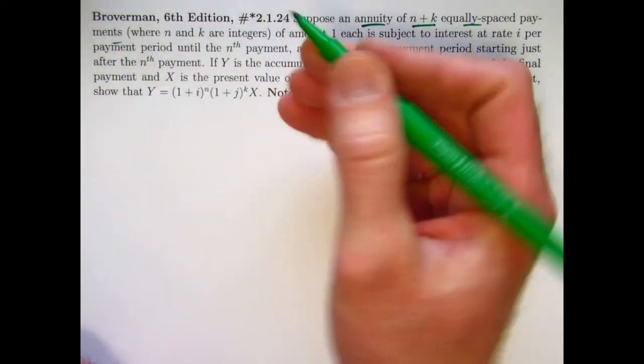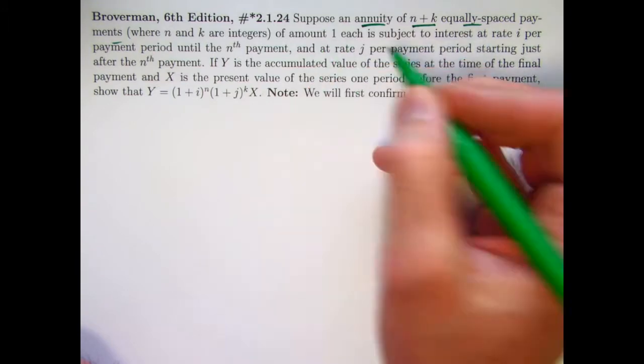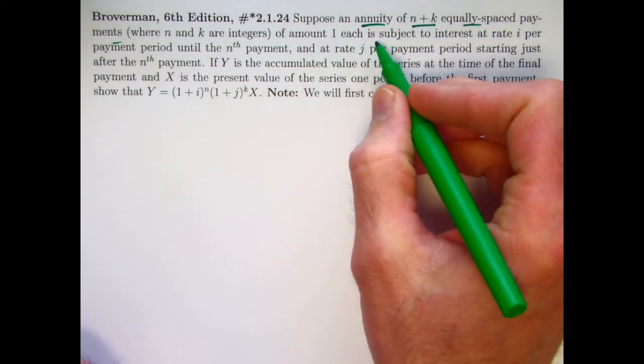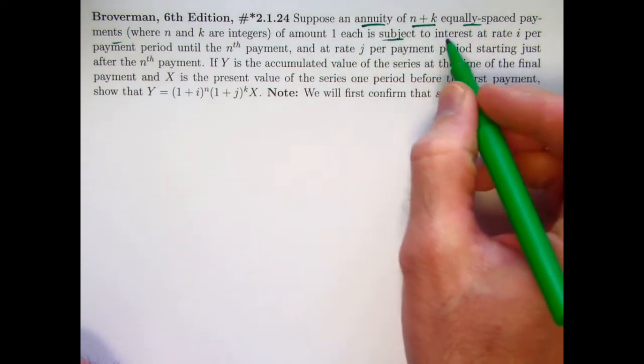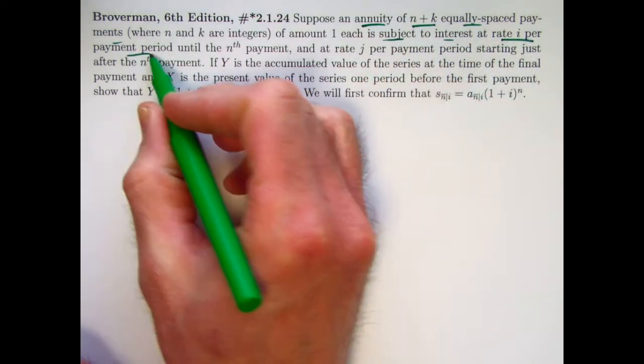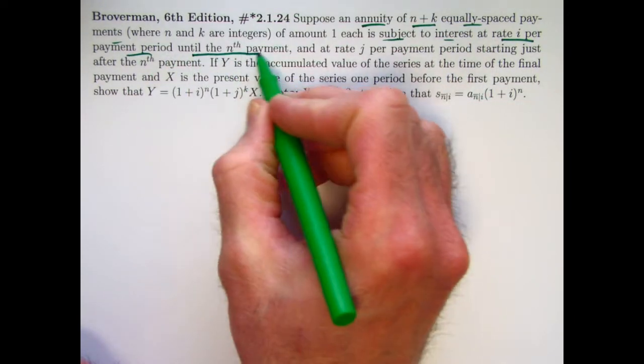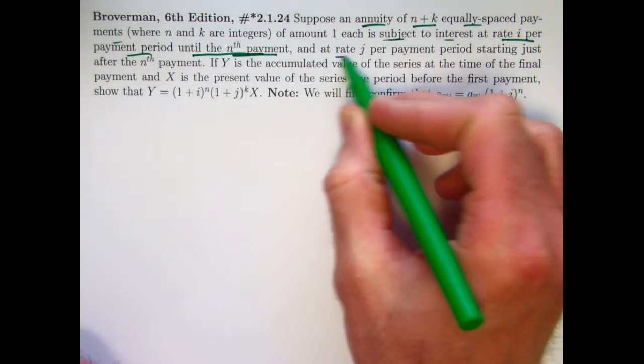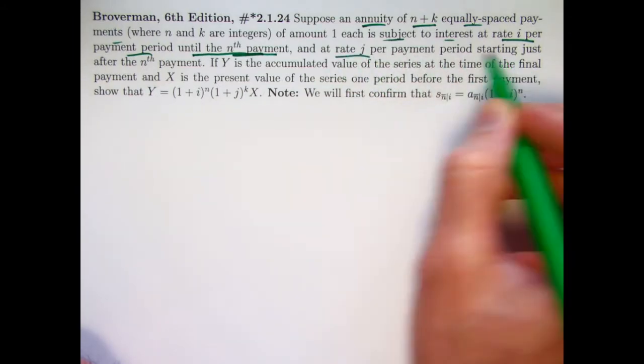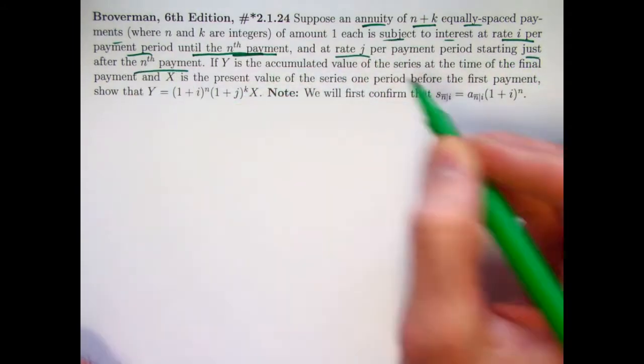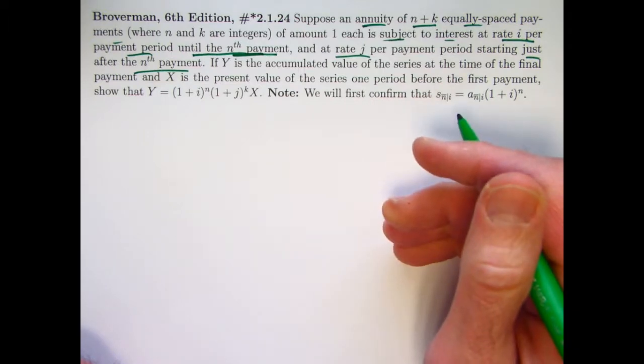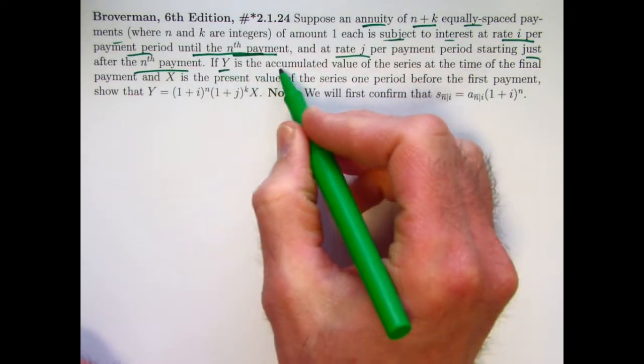Suppose we've got an annuity of n+k equally spaced payments, where n and k are integers, of amount 1 as usual in the theory. Each is subject to interest at rate i per payment period until the nth payment, and at rate j per payment period starting just after the nth payment.